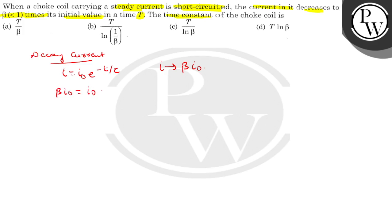So beta i0 equals i0 into e raised to the power minus T upon tau. Therefore e raised to the power minus T upon tau is equal to beta.